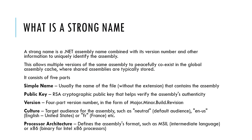What is a strong name? A strong name is a .NET assembly name combined with its version number and other information to uniquely identify the assembly. This allows multiple versions of the same assembly to peacefully coexist in the Global Assembly Cache where shared assemblies are typically stored. A strong name consists of five parts: the simple name, public key, version, culture, and processor architecture information.